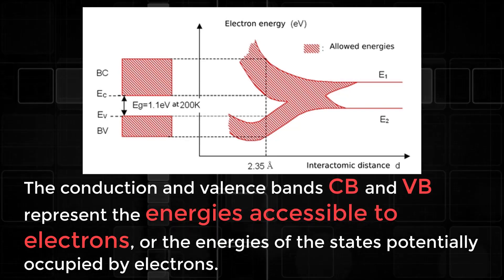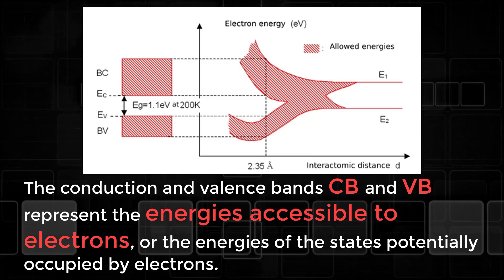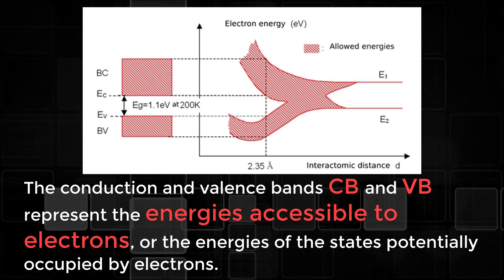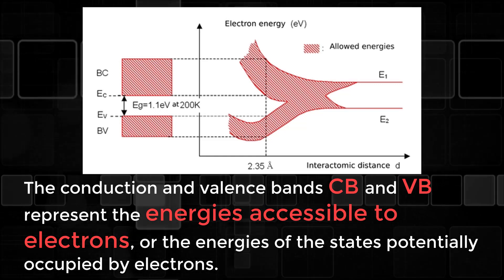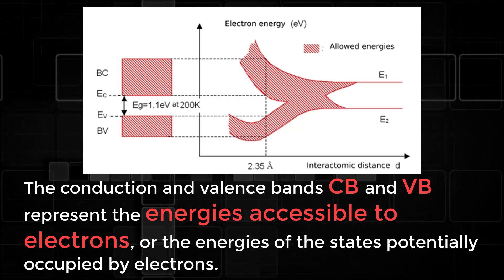The conduction and valence bands CB and VB represent the energies accessible to electrons or the energies of the states potentially occupied by electrons.